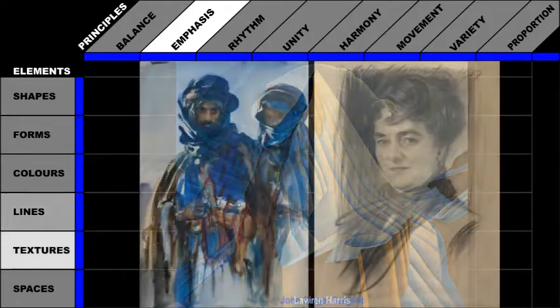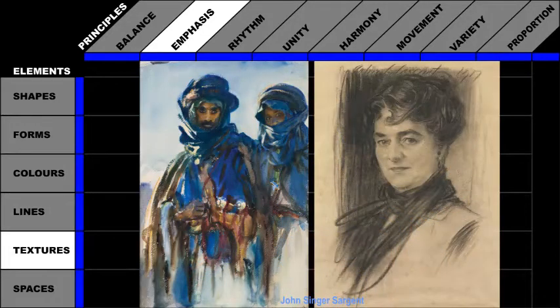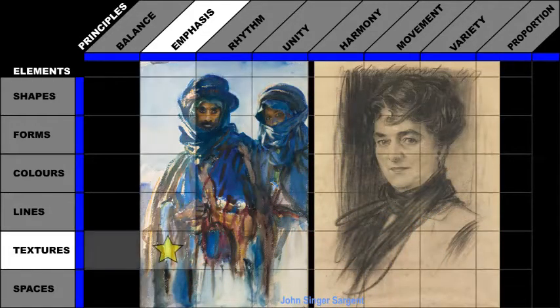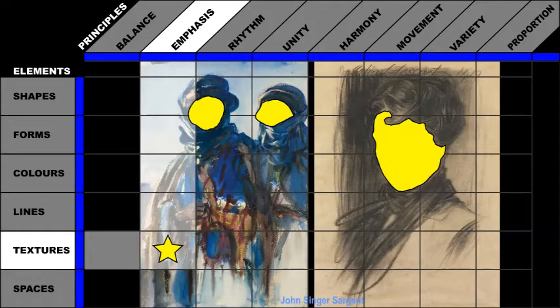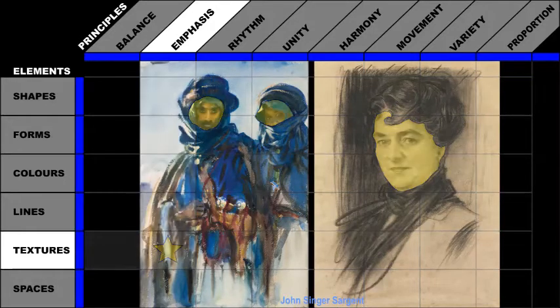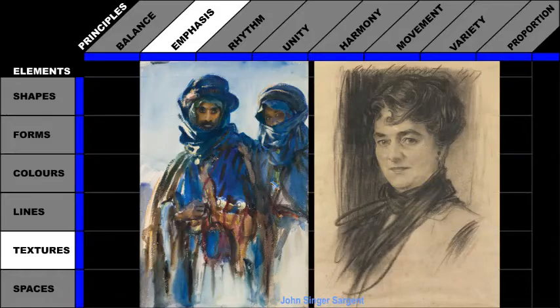John Singer Sargent used textures to create emphasis. The artist directs our attention to the faces in his artwork by making the texture smoother and more detailed. The texture around the faces is rough.